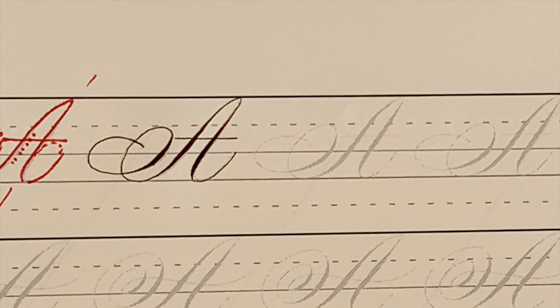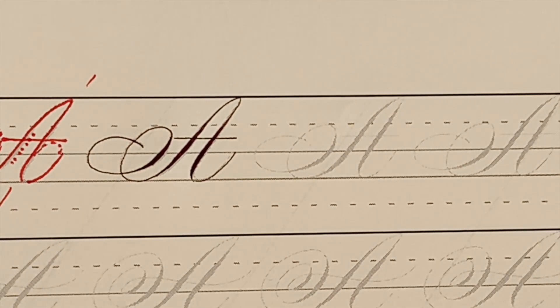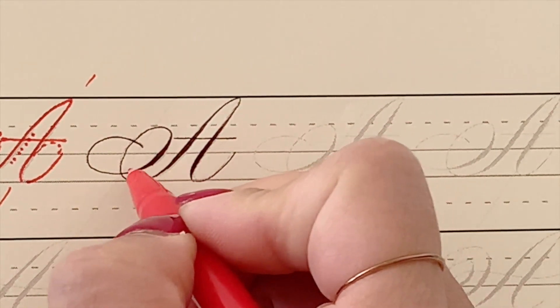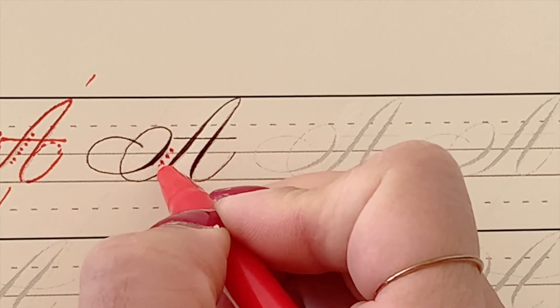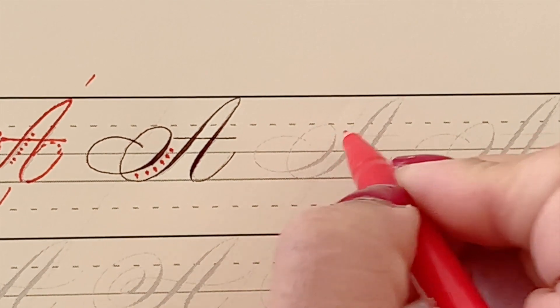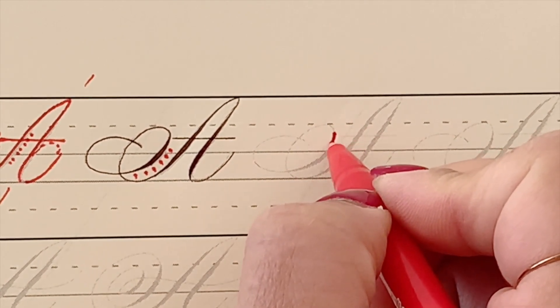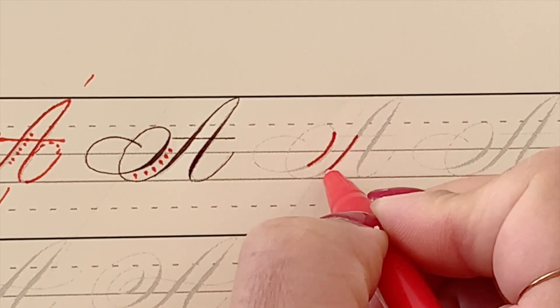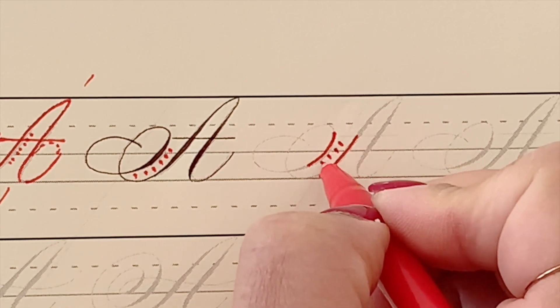Now notice that the gap in between this oval and this oval downstroke, you want the spacing to be equal. So make sure that this line here and here, they are parallel to each other.